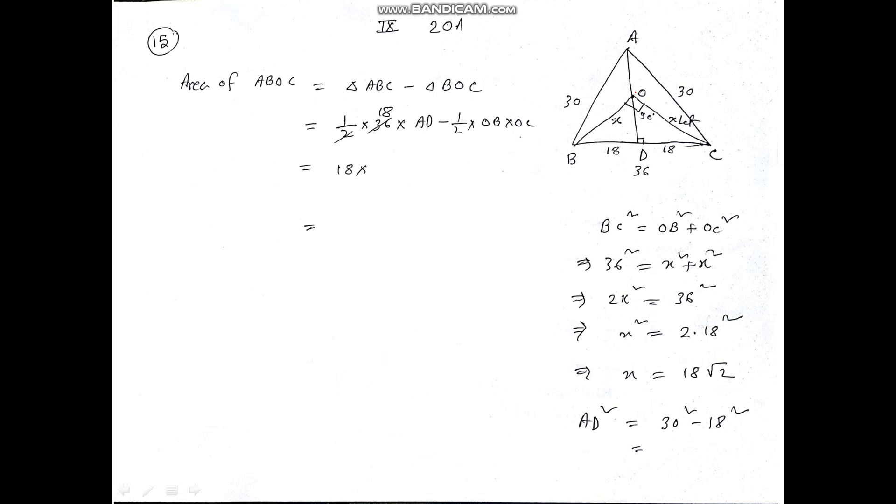Now to find AD squared, if you apply Pythagorean theorem, it's 30 squared minus 18 squared. You can calculate 900 minus 18 into 18 and get the value of AD. Then put this AD value here and minus half into OB value, which is 18 root 2, into OC, also 18 root 2. After getting AD you put it here and do the calculation to get the answer.